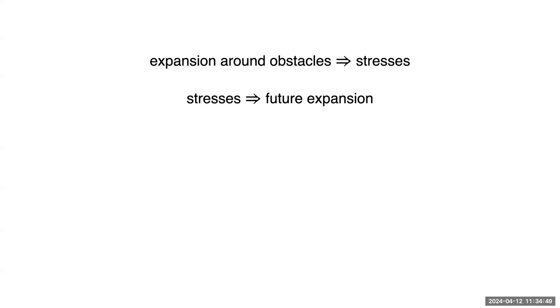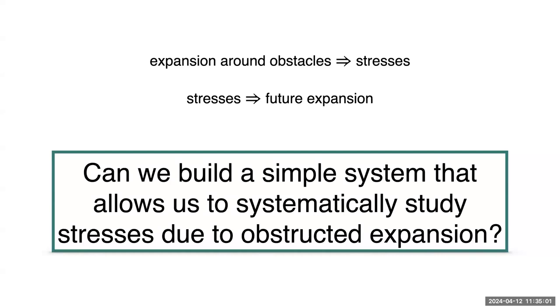However, despite how ubiquitous this phenomenon is, it's still difficult to find a system in which it's easy and accessible to look at the resulting stresses from this phenomenon. So our question that we asked was, can we build the simplest system possible that would allow us to systematically study the stresses that build up due to obstructed expansion? If we were able to do this, we could then ask questions like, does this behavior have general features that we might expect to hold in other setups like the muffin or the artery? Maybe we would find some general behavior, maybe we wouldn't, but this is the goal that we set out to do with this project. Let me say that I'm happy to take questions at the end, but I'm also happy to take questions throughout. If something is unclear, please feel free to jump in.